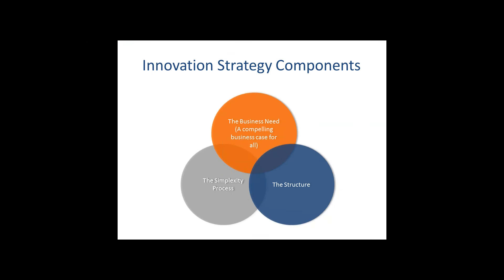Our way of looking at innovation strategy is a three-cornered one. There has to be a compelling need — a business case for each project, for every change project in the organization. There has to be a structure by which this can be accomplished — you can't have people saying, I'll work on it once in a while. And then we need a change-making process. The simplexity process will do the trick, allowing us to meet that business need within the structure. Those three things are compelling needs over and over again in any walk of life if you're going to have innovation.